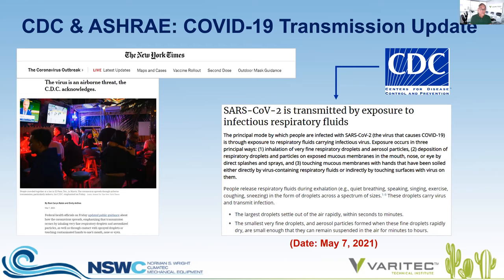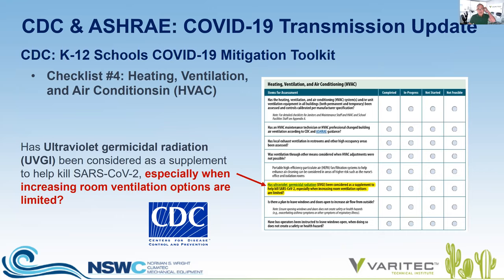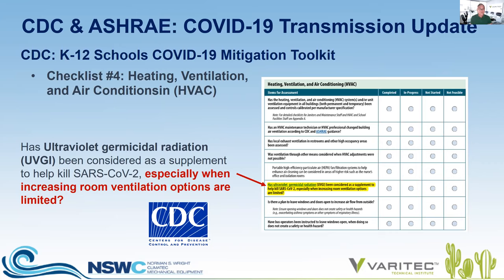You maximize your risk of exposure by being within the six-foot social distancing area because of the size of droplets that could be ingested. But now we have confirmation by the CDC that we need to be concerned about aerosolized viruses as well. The CDC in their K-12 schools COVID-19 mitigation toolkit does address that ultraviolet germicidal radiation has been considered as a supplement to help kill SARS-CoV-2, especially when increasing room ventilation options are limited. The CDC acknowledges UVGI technology as a means for pathogen mitigation.